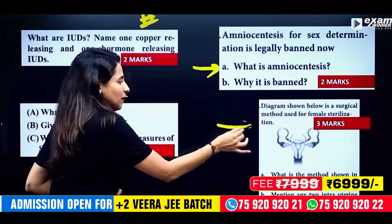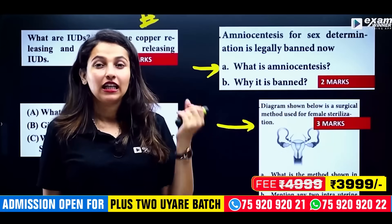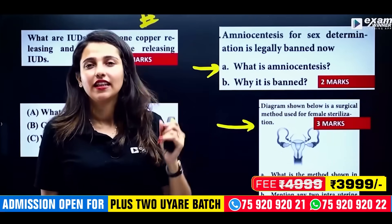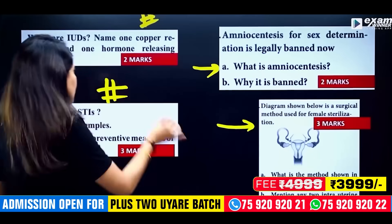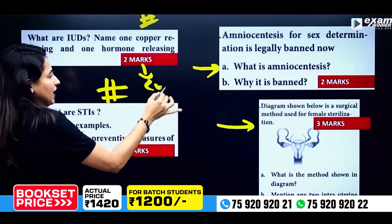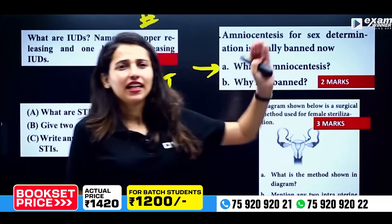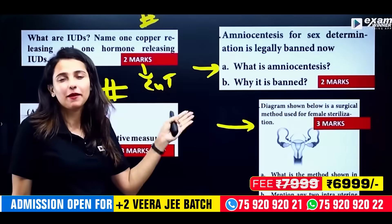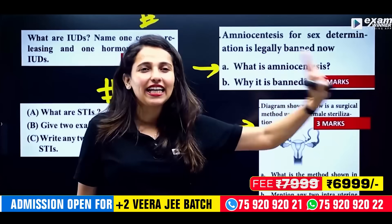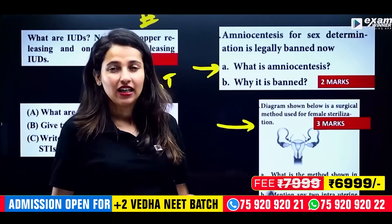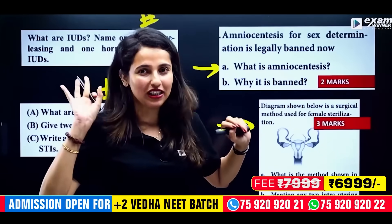Then we have the surgical method — vasectomy and tubectomy. Copper T — if you want to identify the textbook IUD, that is Copper T. You can also see the ART section — Assisted Reproductive Technology. You can see that area and expand on it.